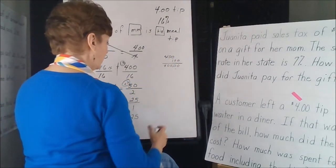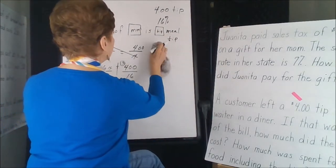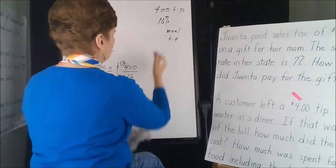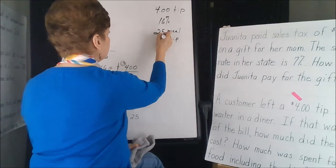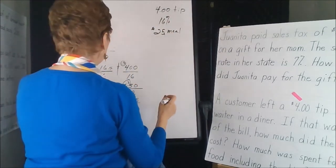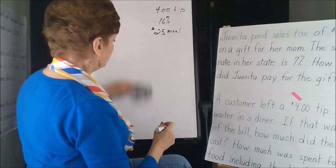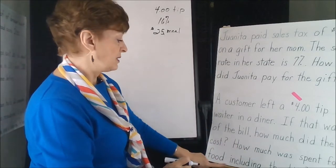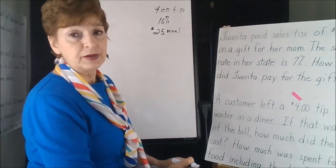So now we know that we've got the meal was $25, and the tip was $4. So we use this new information to be able to answer the last one. How much was spent for the food, including the tip?